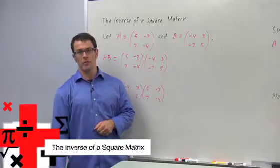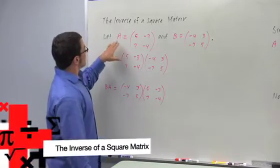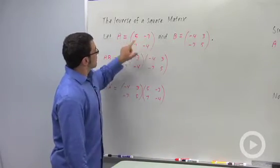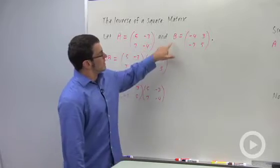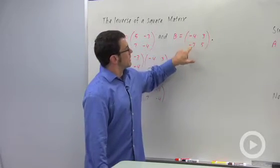I want to talk about the inverse of a square matrix. Let's take a look at an example. I have A equals [[5, -3], [7, -4]], and B equals [[-4, 3], [-7, 5]].